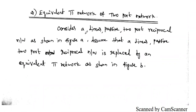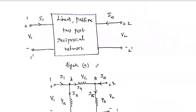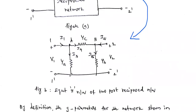First, consider one linear passive two-port reciprocal network. In that network, port 1-1' is the input port and port 2-2' is the output port. We are going to replace this linear passive two-port reciprocal network by its equivalent pi network.